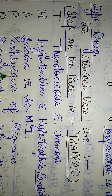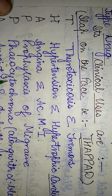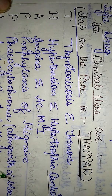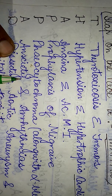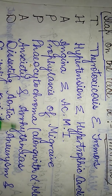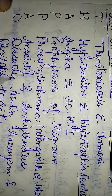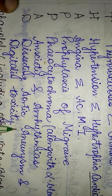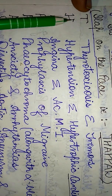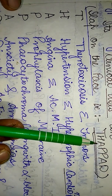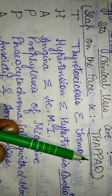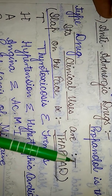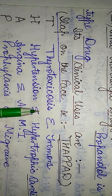The first P of THAPPAD corresponds to prophylaxis of migraine. The second P of THAPPAD corresponds to pheochromocytoma, used along with alpha blockers. The second A of THAPPAD relates to anxiety and arrhythmias. The D of THAPPAD relates to dissecting aortic aneurysm and digitalis toxicity.